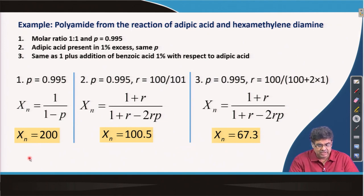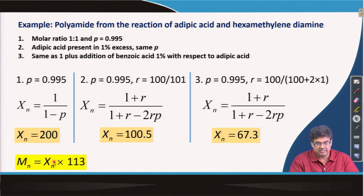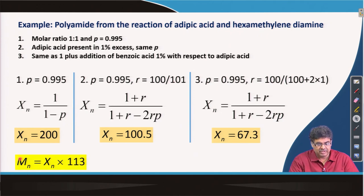To show how you get the molecular weight: M_n is X_n multiplied by the repeat unit molecular weight. For this polymer the repeat unit is 226, so the molecular weight M_n would be X_n multiplied by 113.